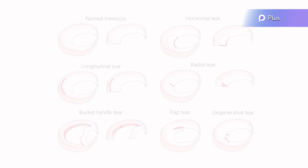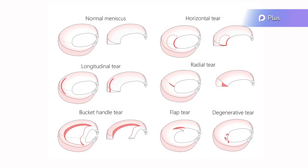The menisci are a common site of injuries in the knee. Meniscal tears can have a traumatic origin or be degenerative. If traumatic, the mechanism of injury is usually twisting on a semi-flexed knee while weight-bearing.